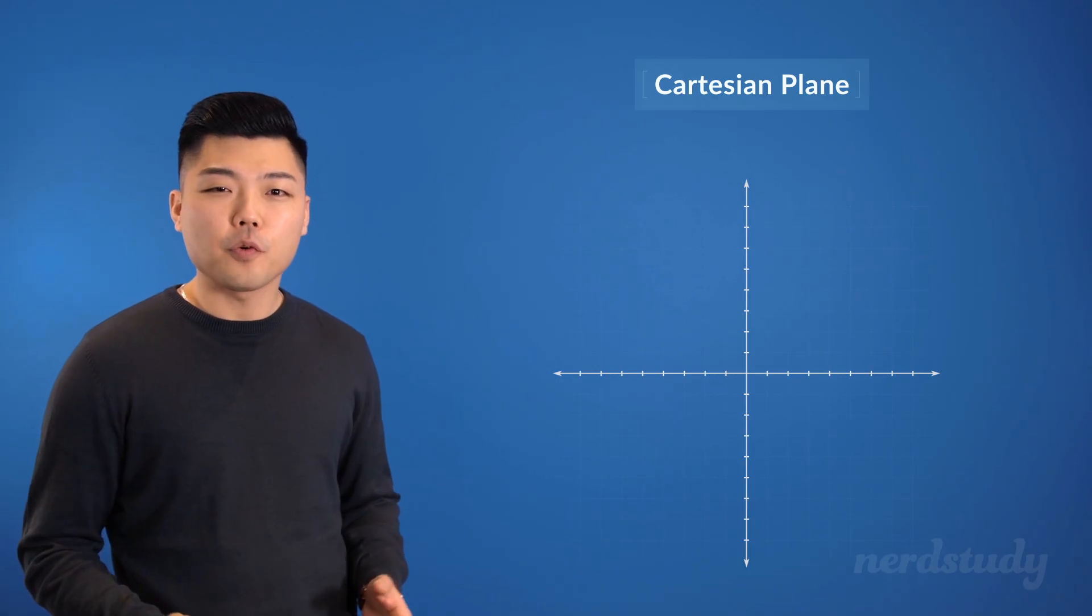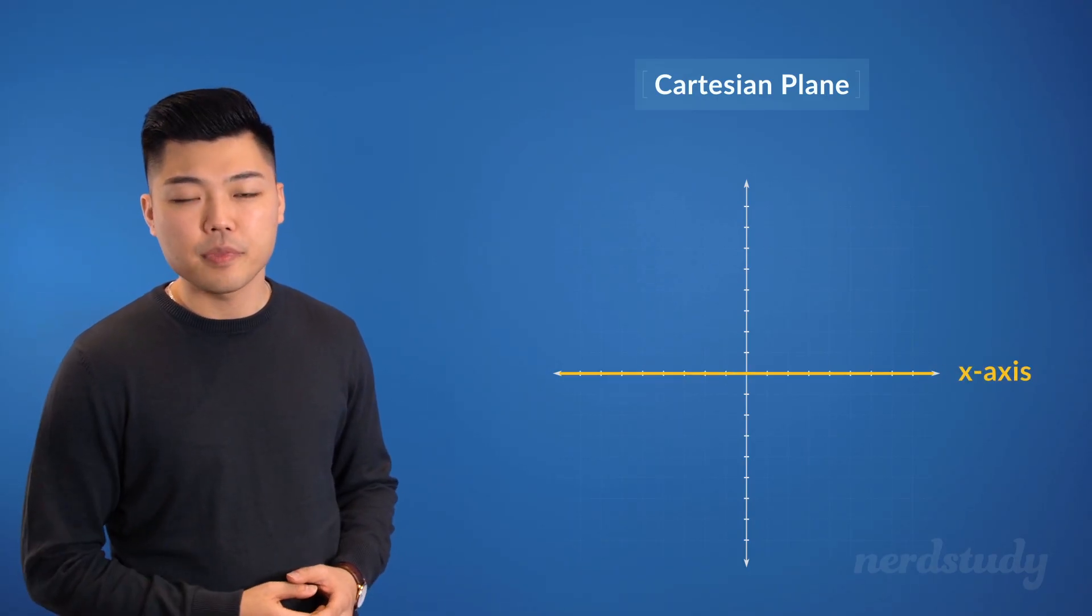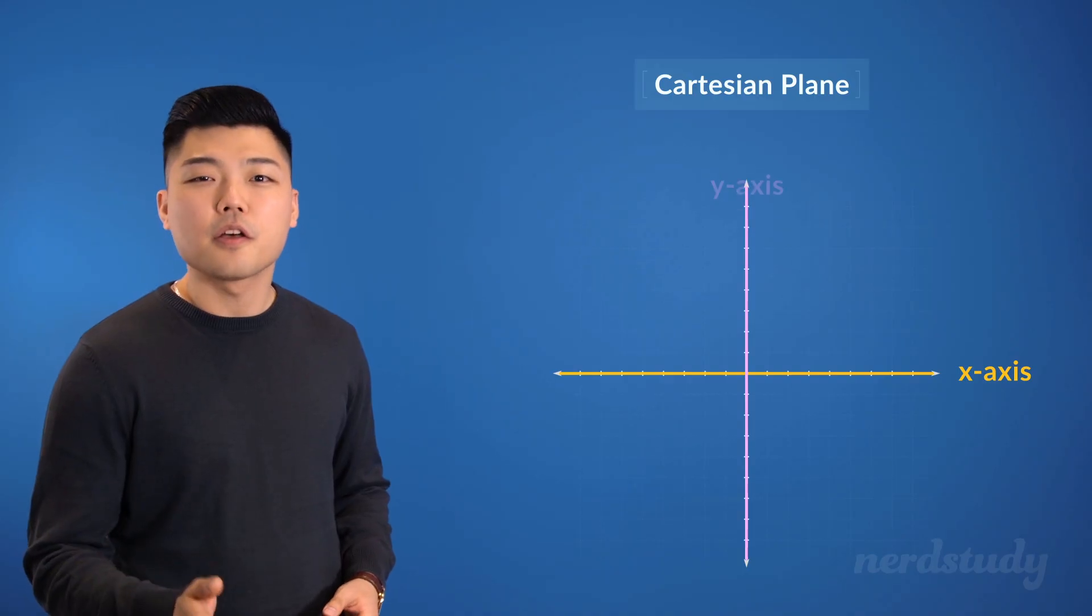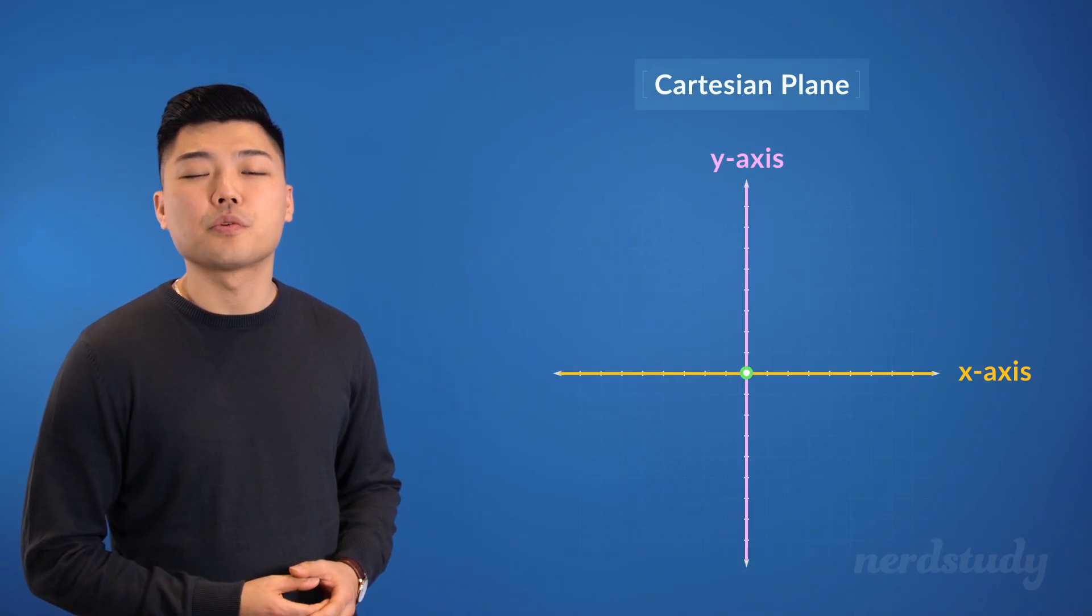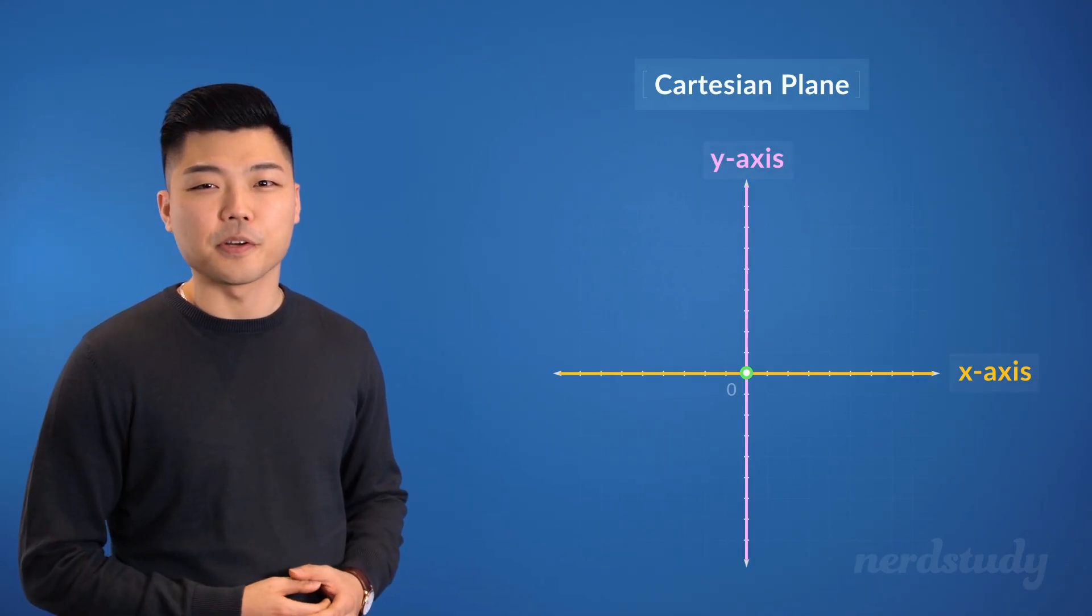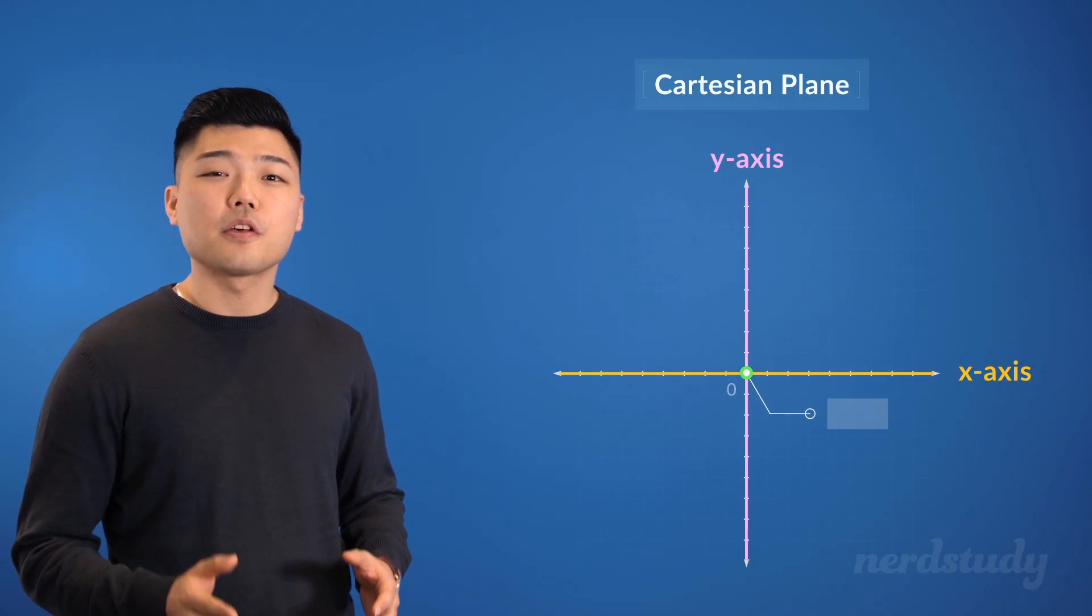In a graph, we call this line the x-axis and this line the y-axis. This right here would be the point where both x and y are equal to zero. We call this the origin.